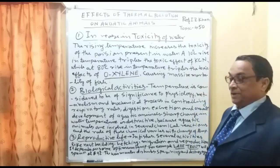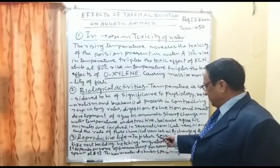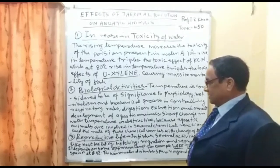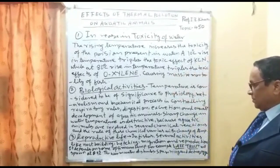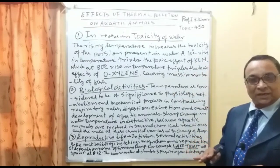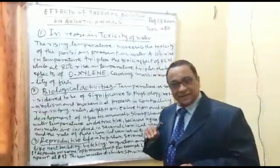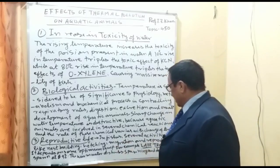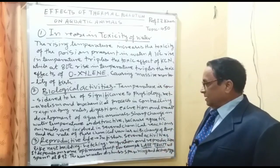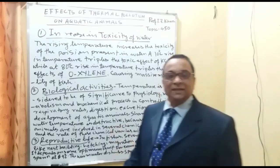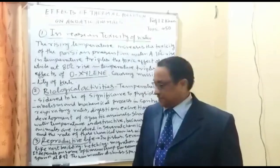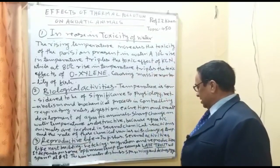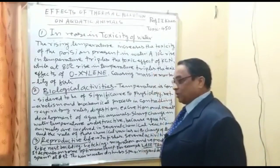Effect number three is reproductive life. In fishes, several activities like nest building, hatching, migration, and reproduction are affected. These depend on an optimum temperature — at that optimum, reproductive activity is good and normal. For example, lake trout will spawn at 8.9 degrees centigrade, and warm water disturbs spawning and destroys the eggs of this fish.